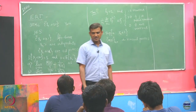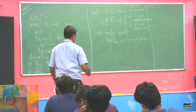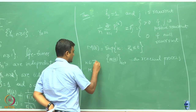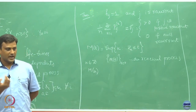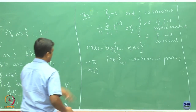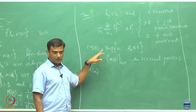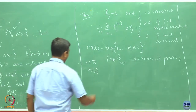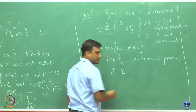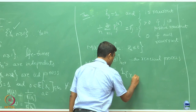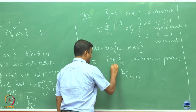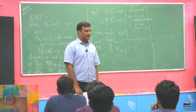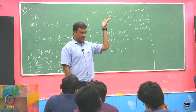Now, this t here is continuous time, but I may also be interested in knowing what happens at m(n) where n is some integer value. I can ask this question. If m(t) is defined for every possible real t, I could as well ask for a particular integer value. Then what is m(n)? In that case, I can write it as the sum of indicators that Z_k equals j for k equals 1 to n. It is basically the number of times I have hit state j till time n, till the nth instance.